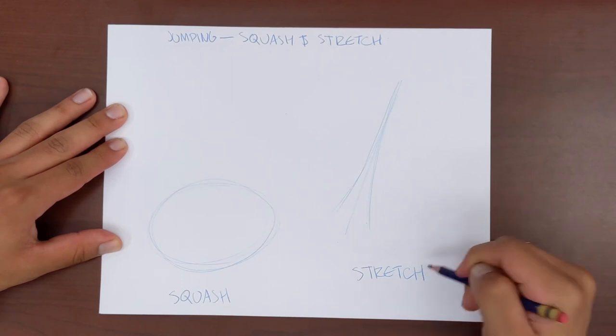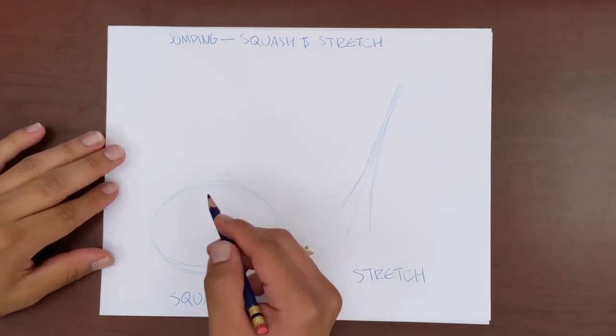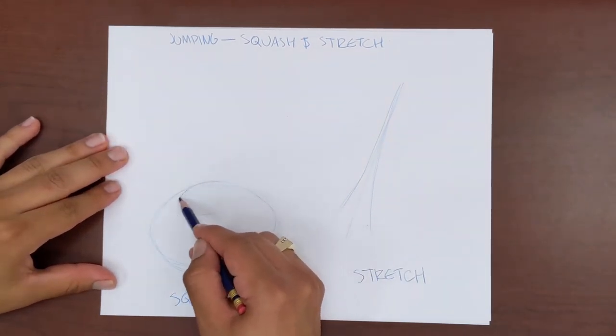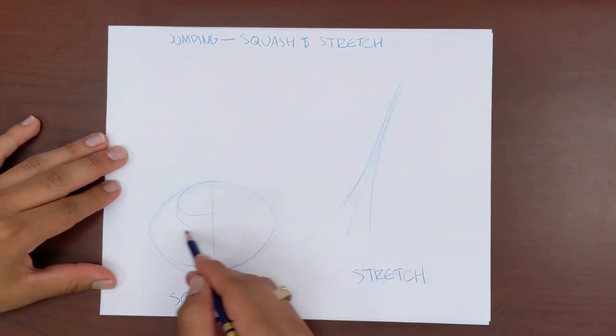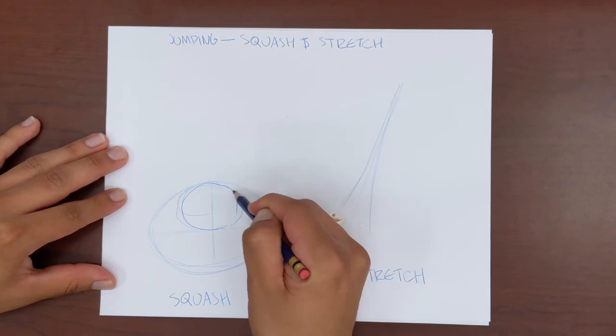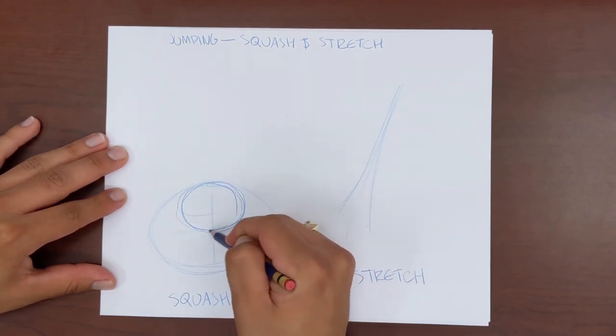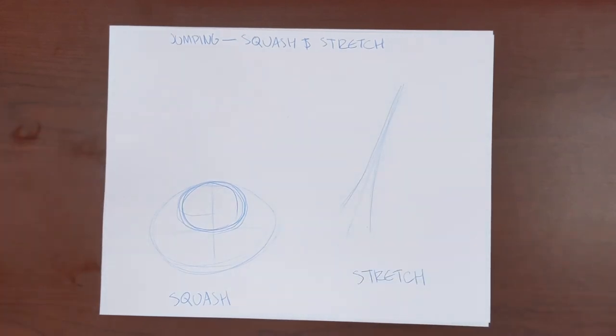For our squash pose, our line of action is going to look a little different and will actually be a semi-squash circle, more like an oval. Within this circle, we can draw our character's head also squashed, kind of looking like an oval as well. Keep in mind we should still be following our proportions for our character with their head being half their height and body and legs each being a quarter.